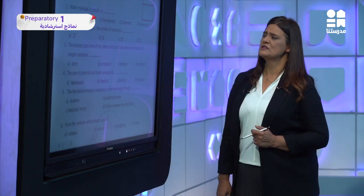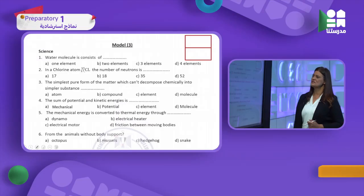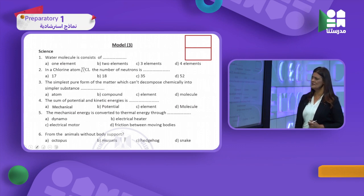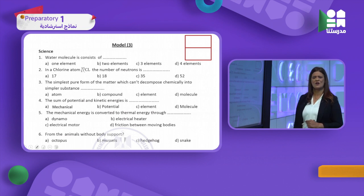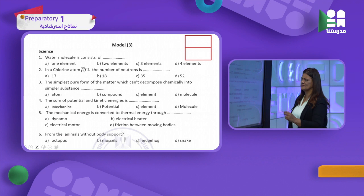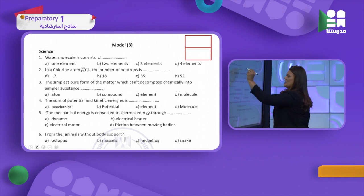Model exam 3. Water molecule consists of how many elements? One element, two elements, three elements, or four? H₂O — H and O — how many elements? The answer is two elements.